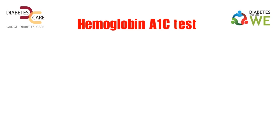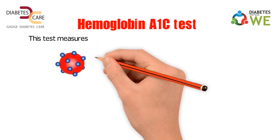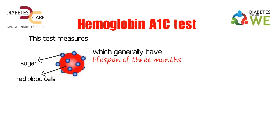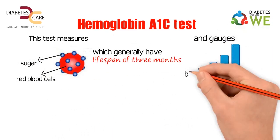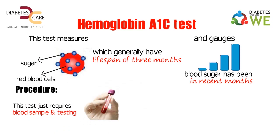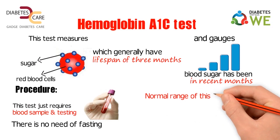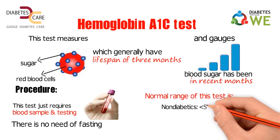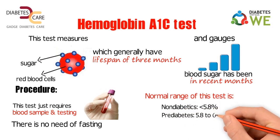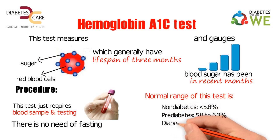The third type is the Hemoglobin A1c test. This test measures how much sugar is stuck to your red blood cells, which generally have a lifespan of 3 months, and gauges how high your blood sugar has been in recent months. This test just requires taking a blood sample — there is no need for fasting. Normal ranges: Non-diabetics: less than 5.8%; Pre-diabetes: 5.8 to 6.3%; Diabetes: more than 6.4%.